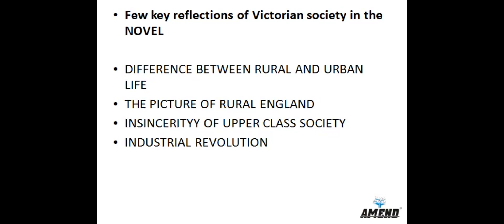Next is the insincerity of upper-class society. People, especially members of the upper class, became immoral and non-sensitive. A number of characters in Great Expectations are dominated by greed for money. When Pip goes to Miss Heavisham's house for the second time, he finds a number of Miss Heavisham's relatives there. He calls those relatives 'toadies and humbugs' — meaning flatterers and insincere people.